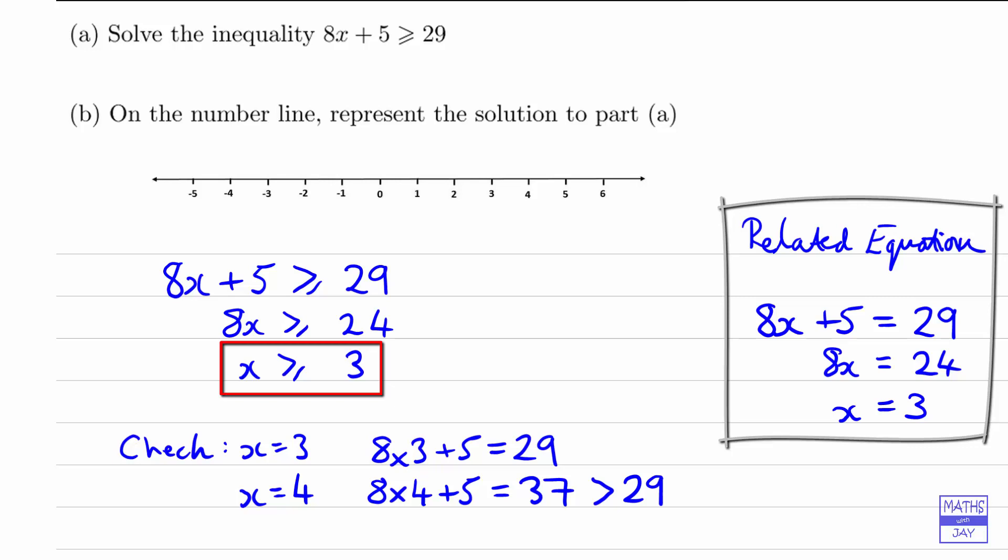Okay, so that's the solution, and then we want to show the answer on the number line. So we're starting off at x equals 3, so we've got a circle at x equals 3. And because x can be equal to 3, we want to shade in that circle.